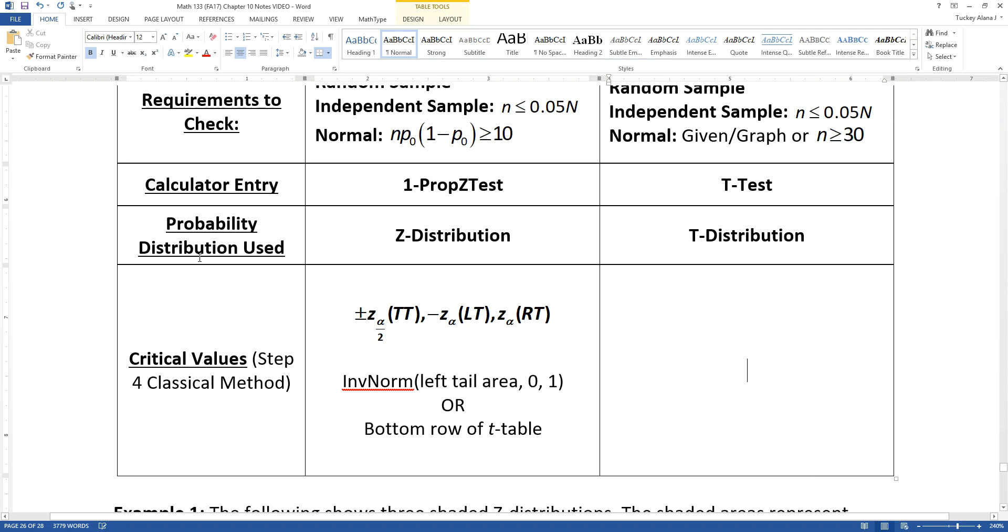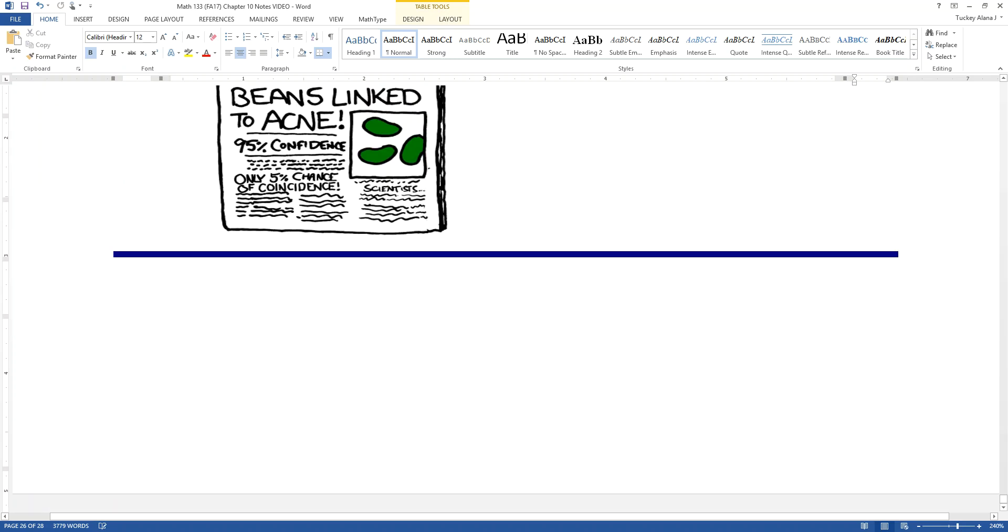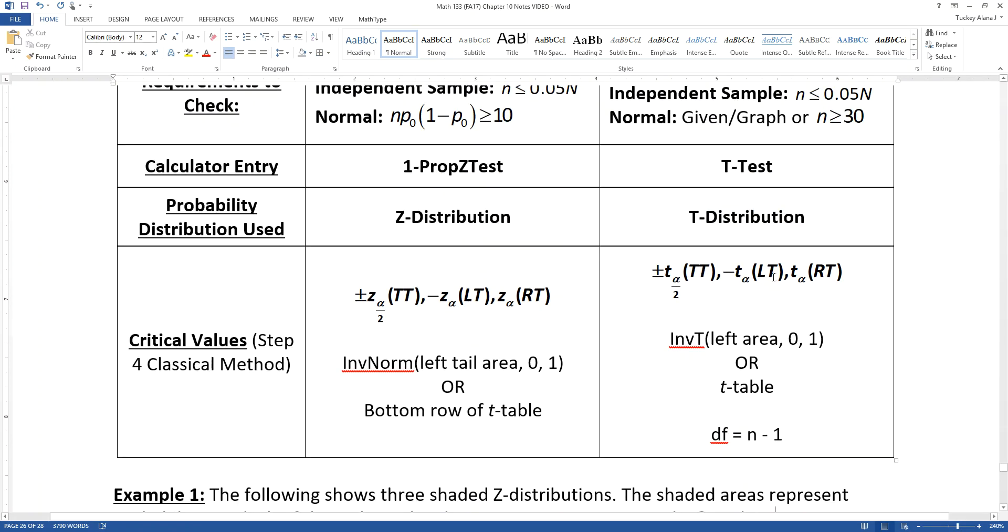For the t-test, it's the same thing. It's just that it's plus or minus t-alpha over 2, negative t-alpha, and positive t-alpha. You use inverse t, just like we did with confidence intervals, or we can use the t-table. Just remember that your degrees of freedom is n minus 1.